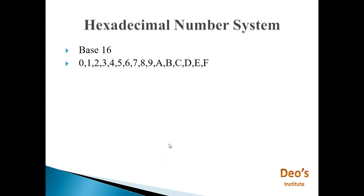Hexadecimal number system is a number system with base 16. As it is hexadecimal and base is 16, there are total 16 numbers available in this number system. They are 0 to 9 and A to F, meaning total 0 to 15.